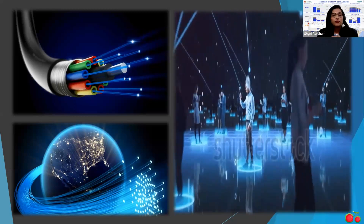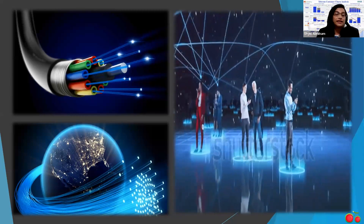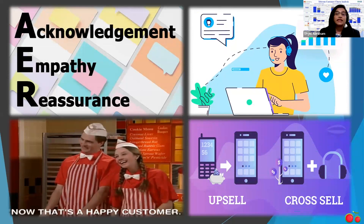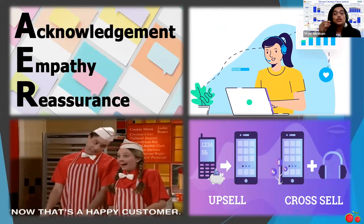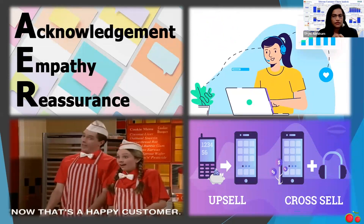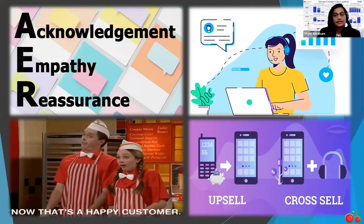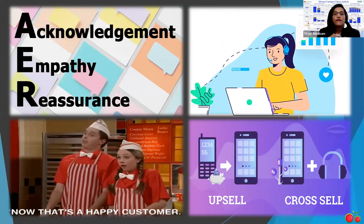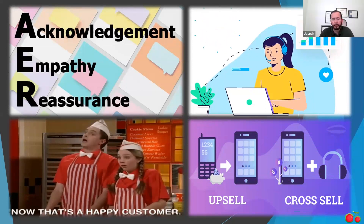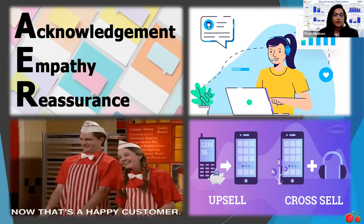Additionally, offering fiber optic customers unlimited data or a new device can help retain them. The third strategy is focusing on effective customer service — show customers empathy, reassure them that you are listening, and make them feel valued. Upselling and cross-selling products and services, as well as rewarding loyal customers with exclusive deals and discounts, can also help retain customers. Research shows that offering better customer service and service plans can save up to 40% of telecom customers from churning.